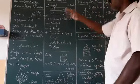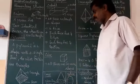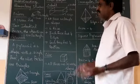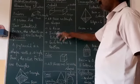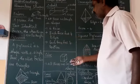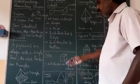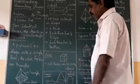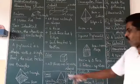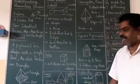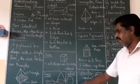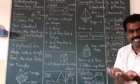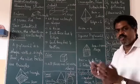A cube also has six faces, each face with four edges and four vertices, just like a cuboid — but in a cube, all faces are square in shape. A cone has a triangular form with a circular base at the bottom. A sphere is a round form with no base at all.